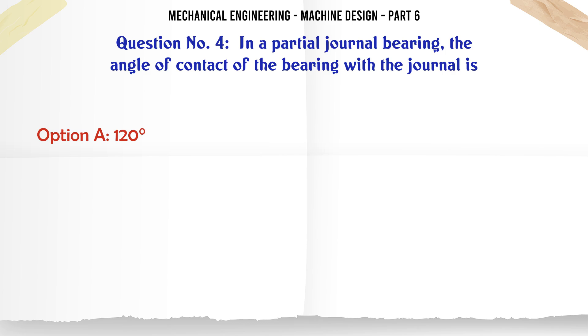In a partial journal bearing the angle of contact of the bearing with the journal is: A) 120 degrees, B) 180 degrees, C) 270 degrees, D) 360 degrees. The correct answer is 120 degrees.